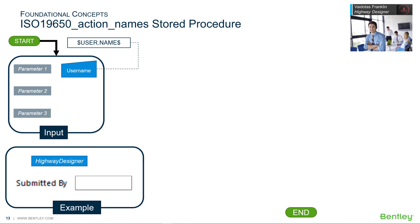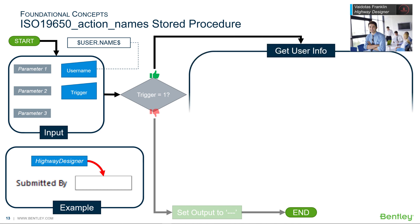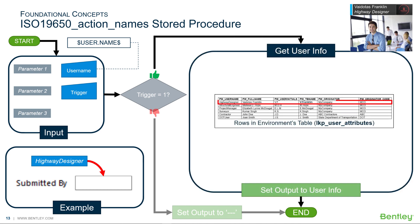When executing the stored procedure, we can grab the current ProjectWise user's username using a system variable: dollar sign, user dot name, dollar sign. Parameter two is the trigger value and will either be one or zero. If the trigger is set to a value other than one, the output will simply be three hyphens to denote a blank value. When set to one, information about the user is retrieved from the lookup table.